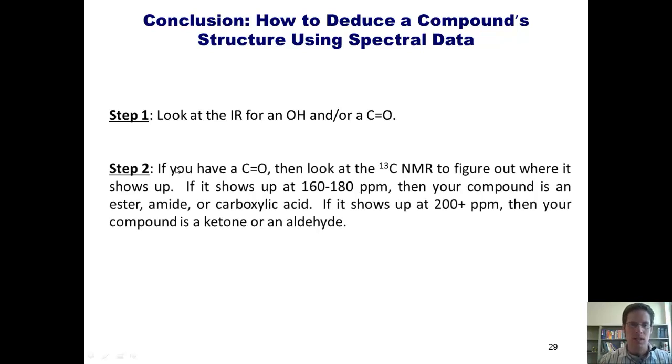Step two, if you have a carbonyl as determined from the IR, then look at the C13 NMR to figure out where it shows up. If it shows up at 160 to 180 ppm, then your compound is an ester, amide, or carboxylic acid. If it shows up at 200 or above, then it's a ketone or an aldehyde.